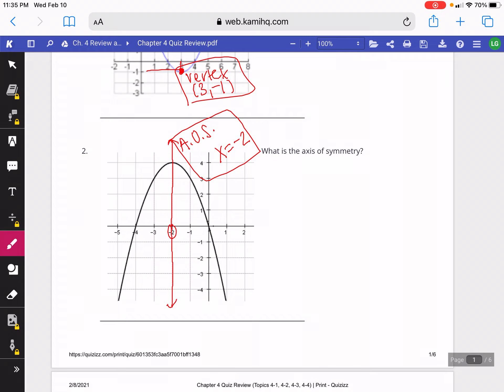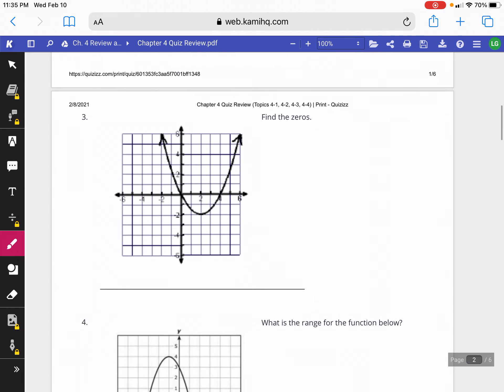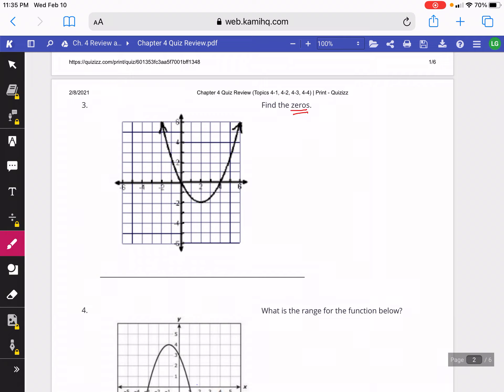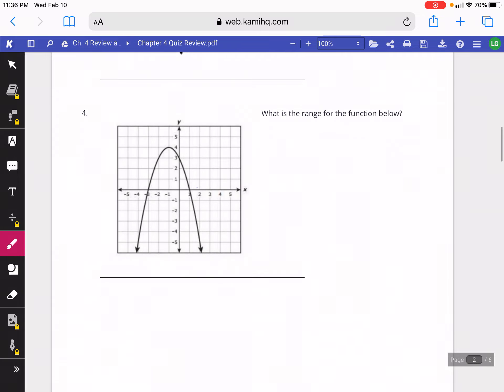This next question asks us to find the zeros. Remember, zeros is another name for x-intercepts. Here this one has two x-intercepts: one of them's at 0 and one of them's at 4.